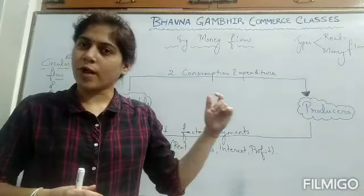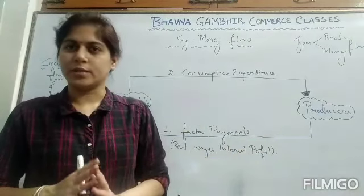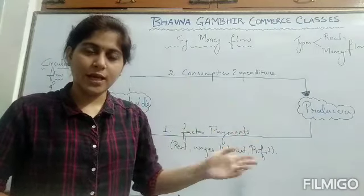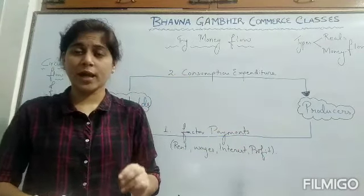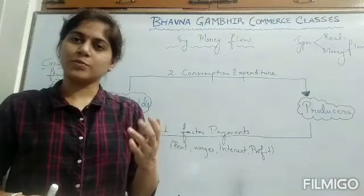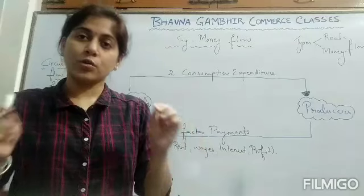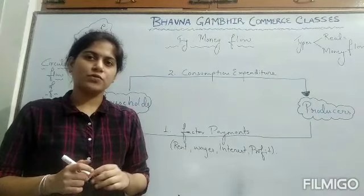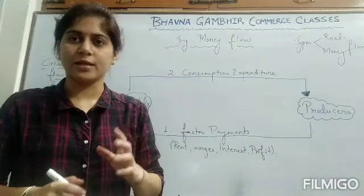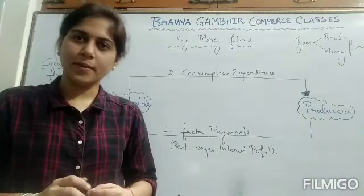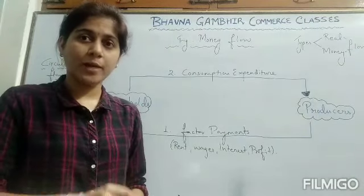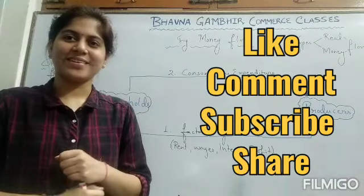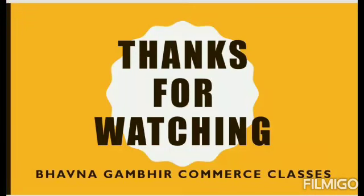To summarize: households, as owners of factors of production, provide factors to firms and receive factor income in return. Firms provide goods and services, and households give consumption expenditure back to producers. This completes the two-sector model involving households and firms. Three-sector and four-sector models also include government and the rest of the world. This was Chapter 1, Part 2 — Circular Flow of Income. You can find study material in the description. Take care and do like!